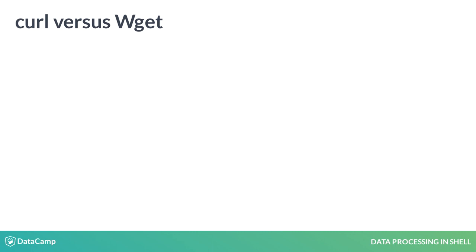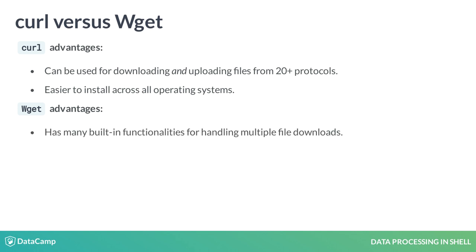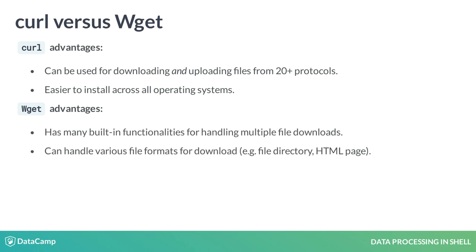As we round out this chapter, it is helpful to do a quick comparison between the two command line tools curl and wget. Although both curl and wget can download files from HTTP, HTTPS, and FTP, curl alone can download and upload from 20 other protocols. It is also easier to install across all operating systems compared to wget. Wget's advantage is its ability to handle multiple file downloads gracefully. It can also be used to download just about anything, from a full file directory to an HTML page.